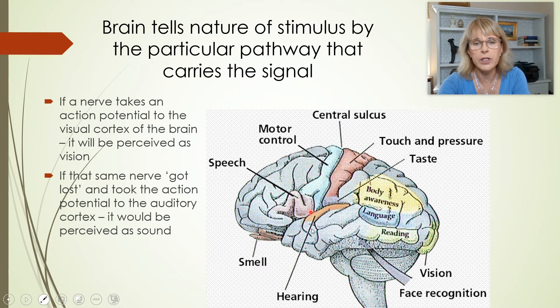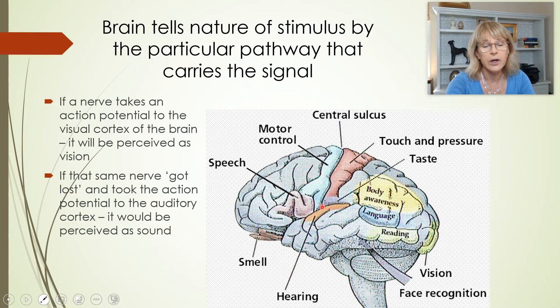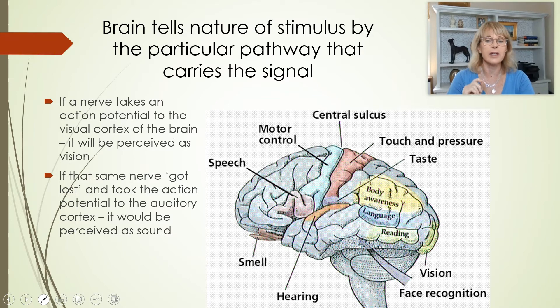For example, this part of your temporal lobe of your brain, it is only meant to process hearing. So any action potential that arrives there will be processed as a sound. Any action potential that arrives here will be processed as visual stimulus, right? Any action potential that arrives here, it will be processed as a smell.